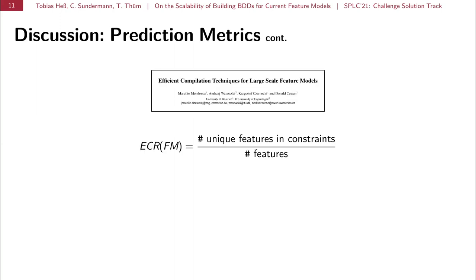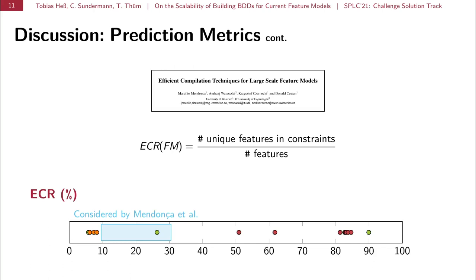So let's look into the metric defined by Mendonca et al., which is the quotient of unique features and constraints and the number of features. And again, in this plot, we see that we do very well on both ends of the scale, but not really so in between. And we also plotted in blue the range of the artificial feature models Mendonca et al. used for their computation of the threshold of 2000 features. And we see that only one feature model lies within this threshold. And all other feature models are well beyond or even below this range for the quotient.